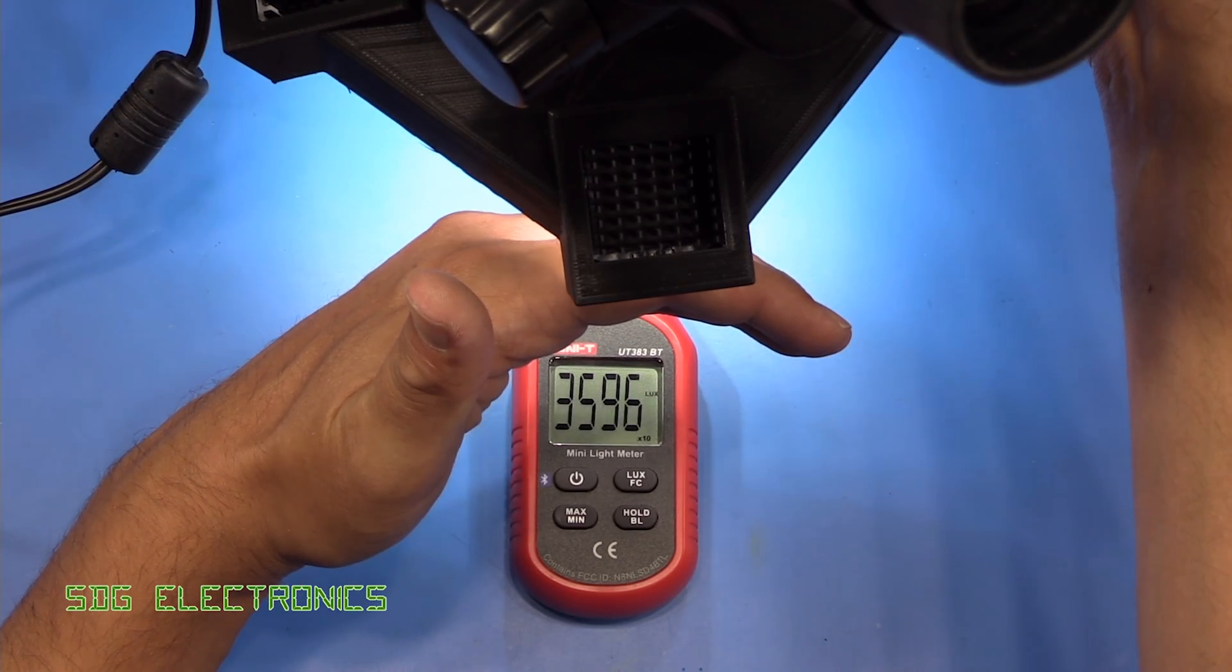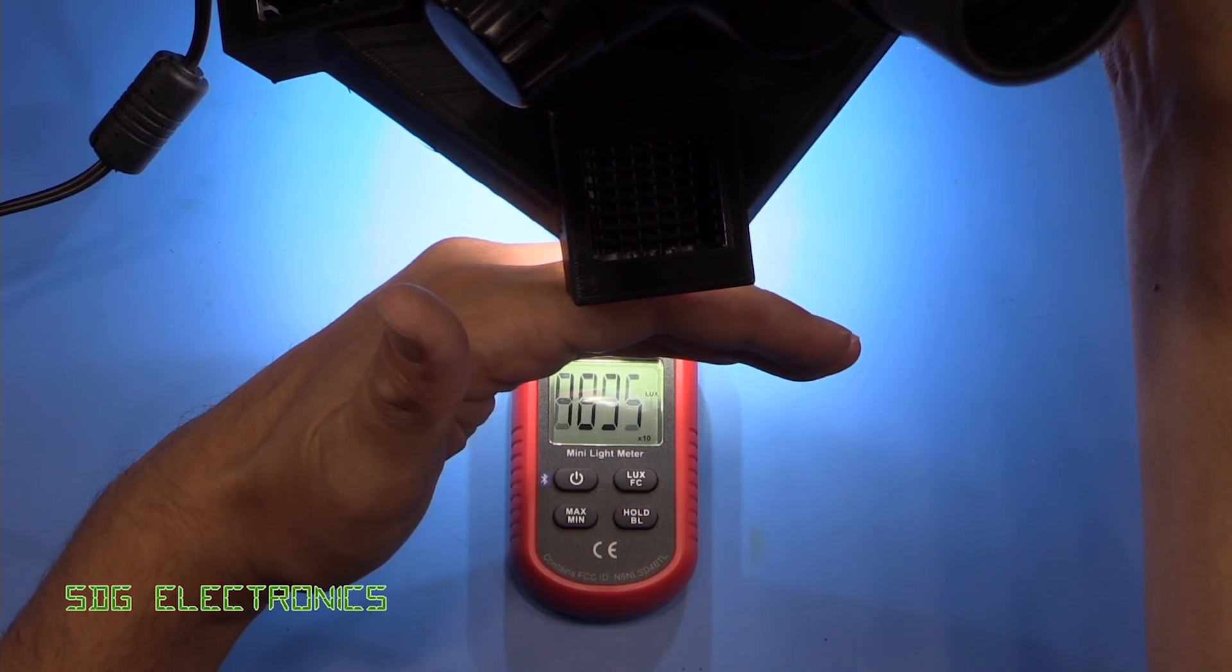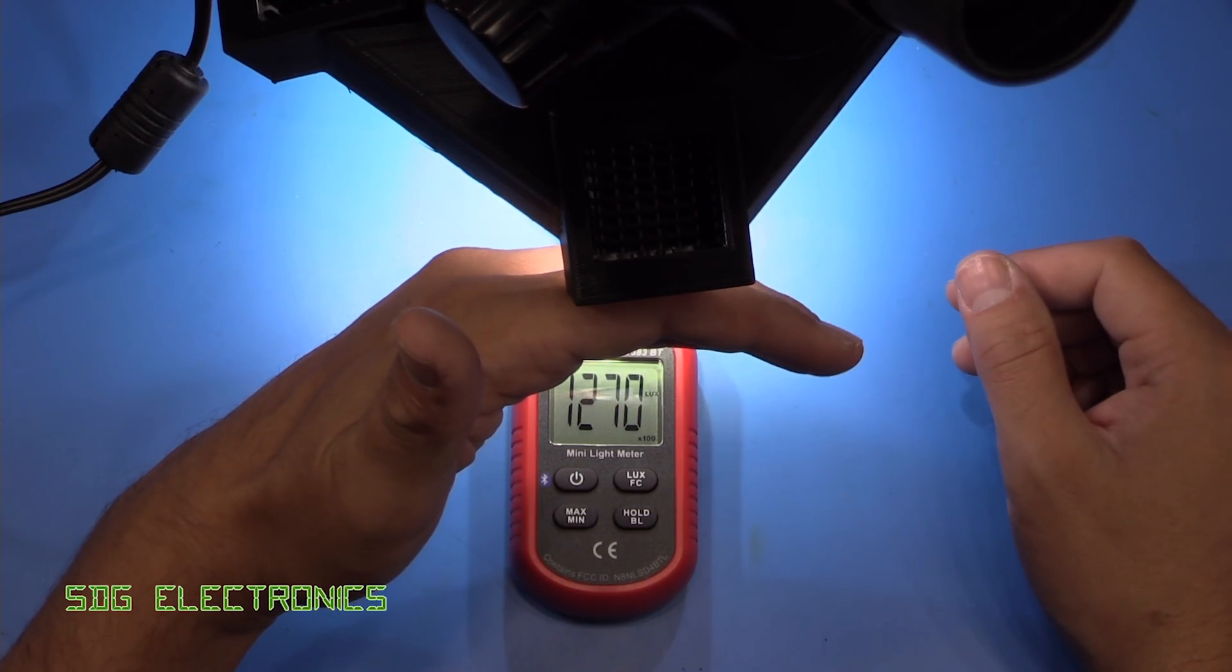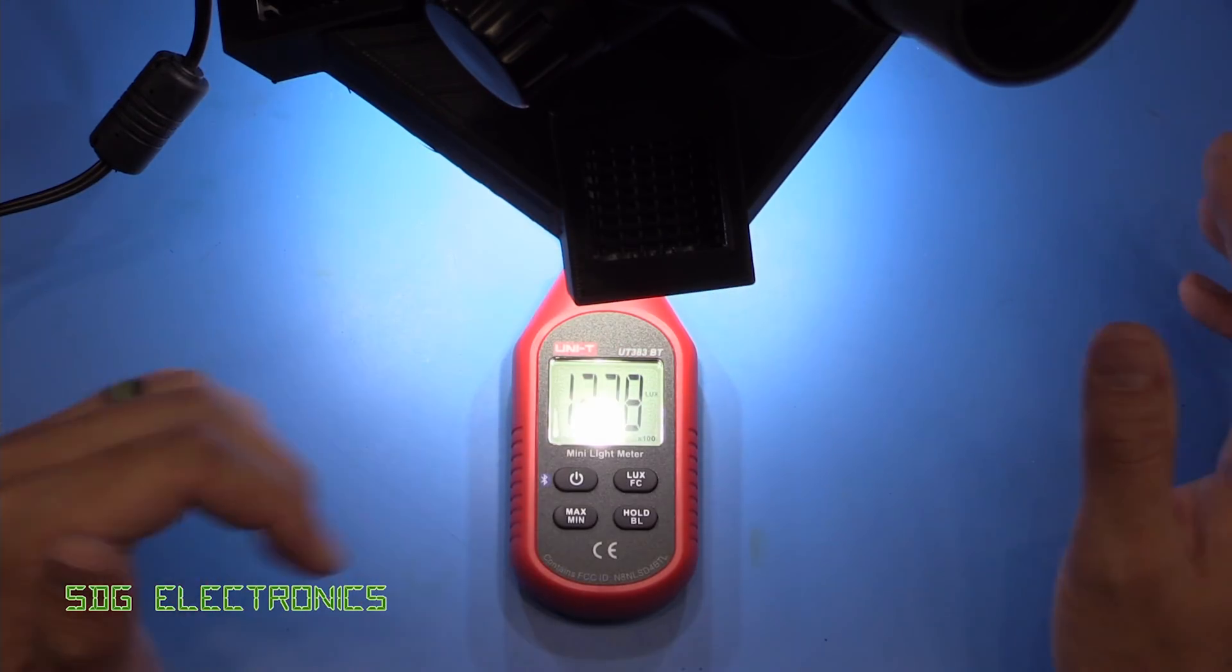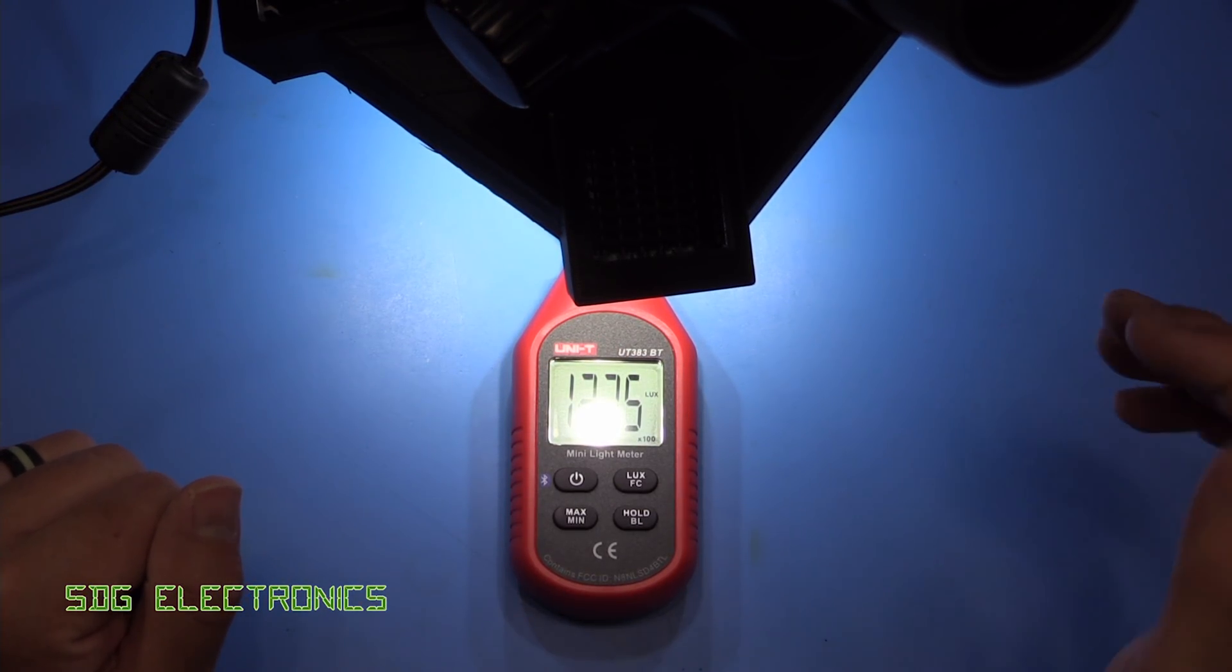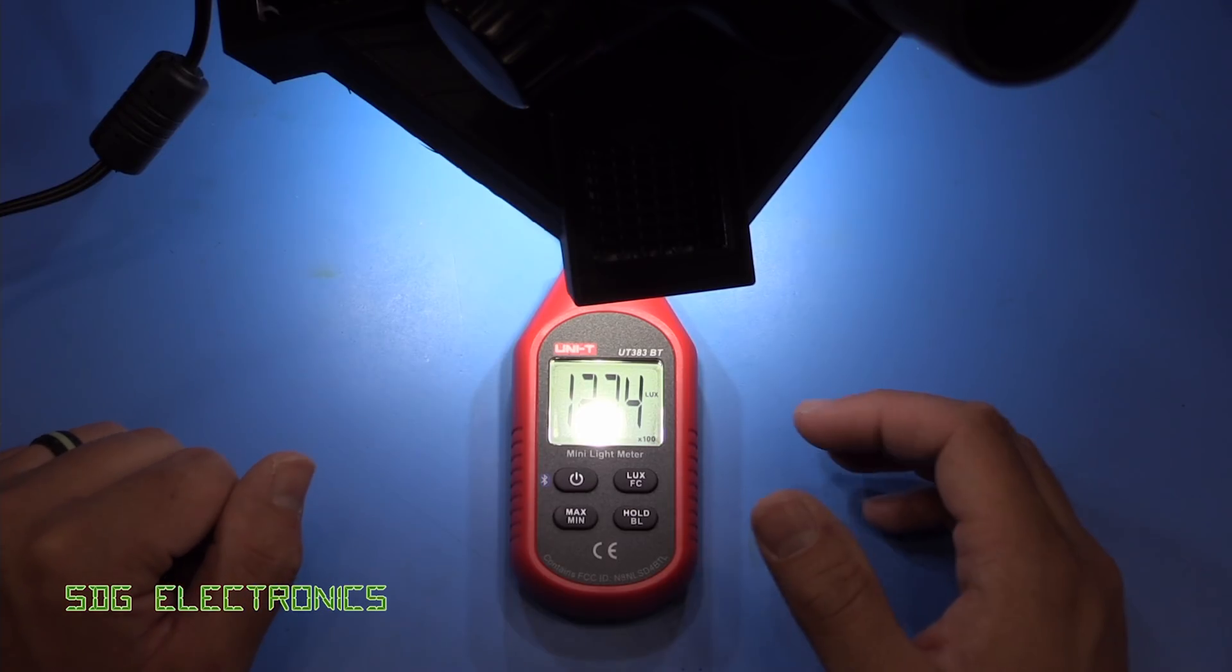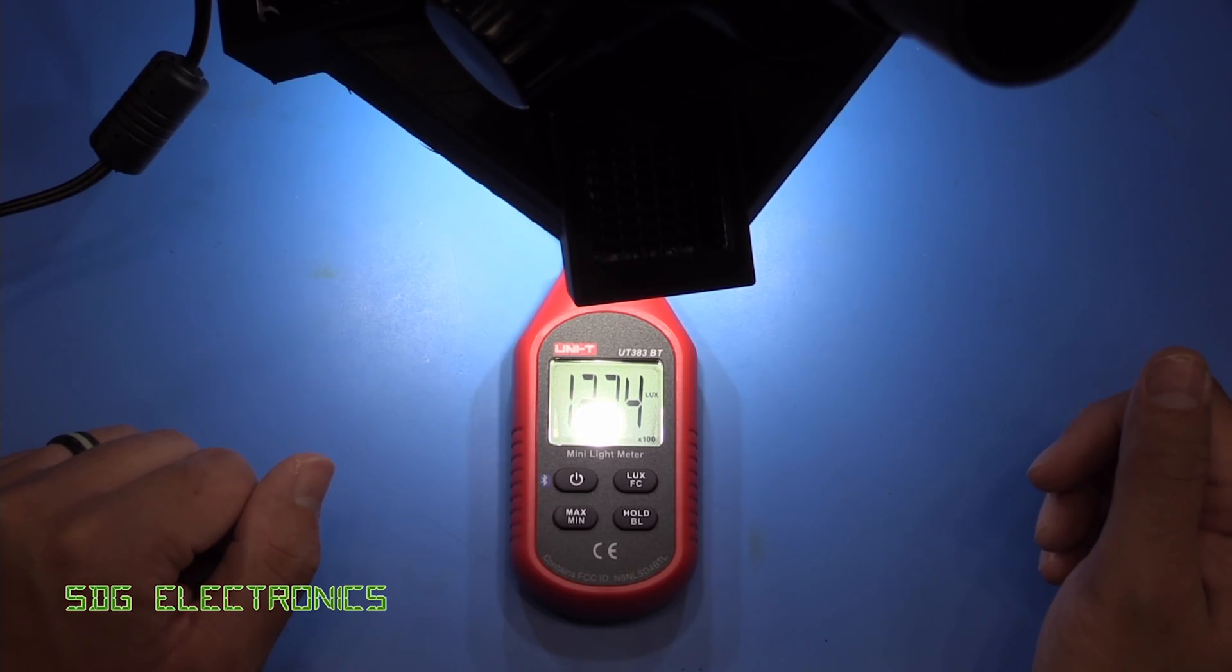So already quite a lot brighter. And then if we increase it up to maximum, we are just shy of 130,000 lux. And about 115,000 is direct sunlight onto the bench. So we're brighter than direct sunlight here.